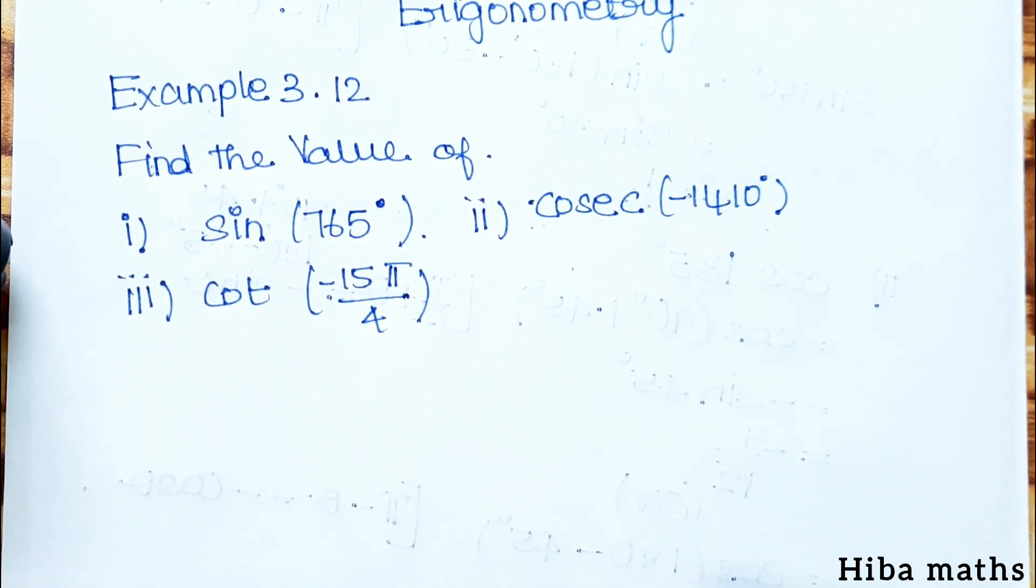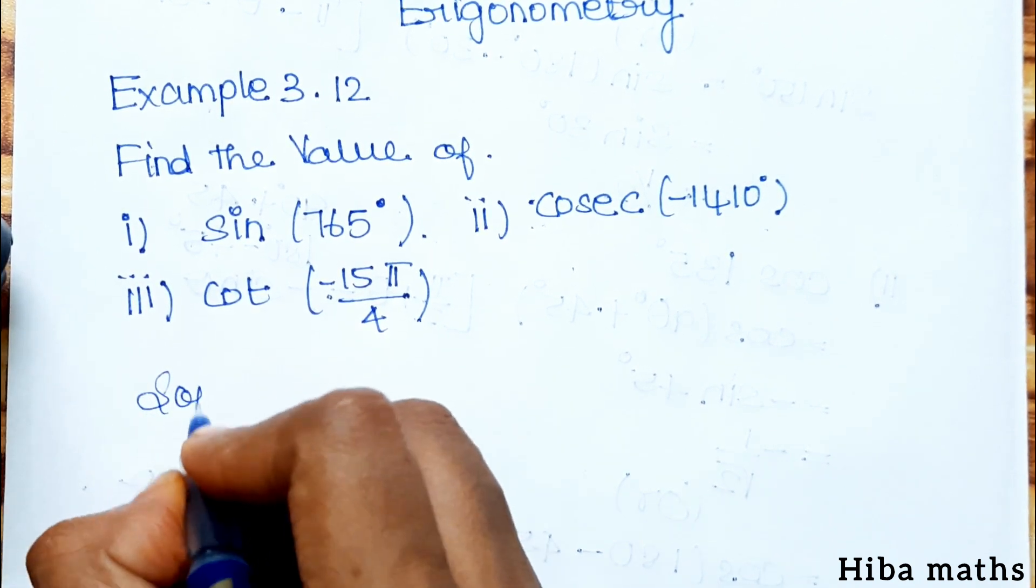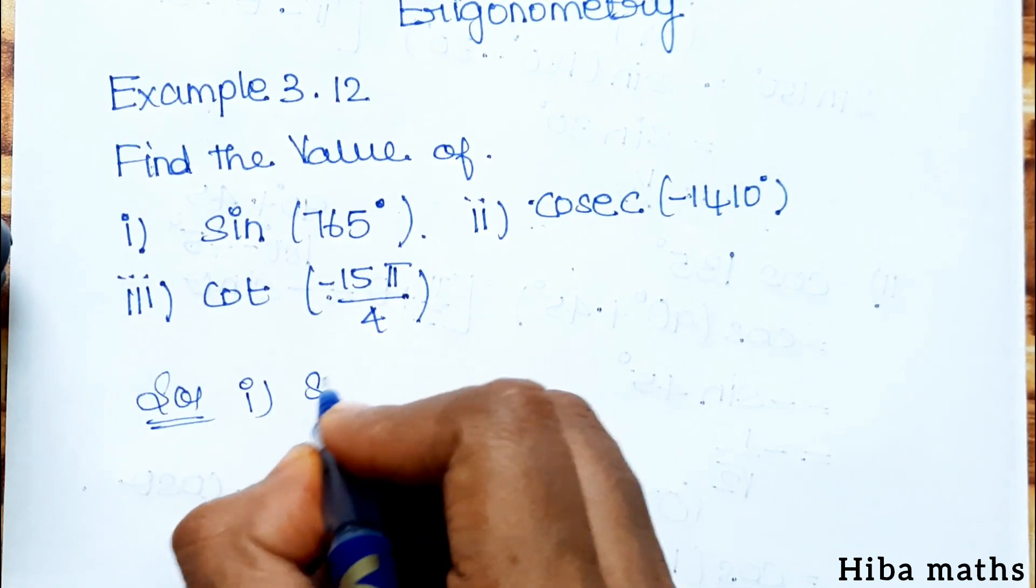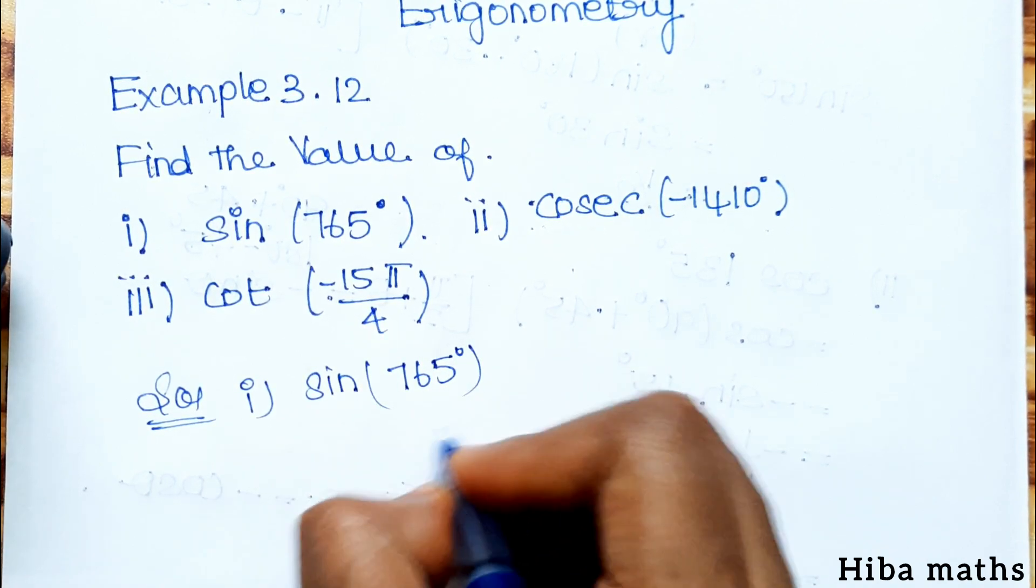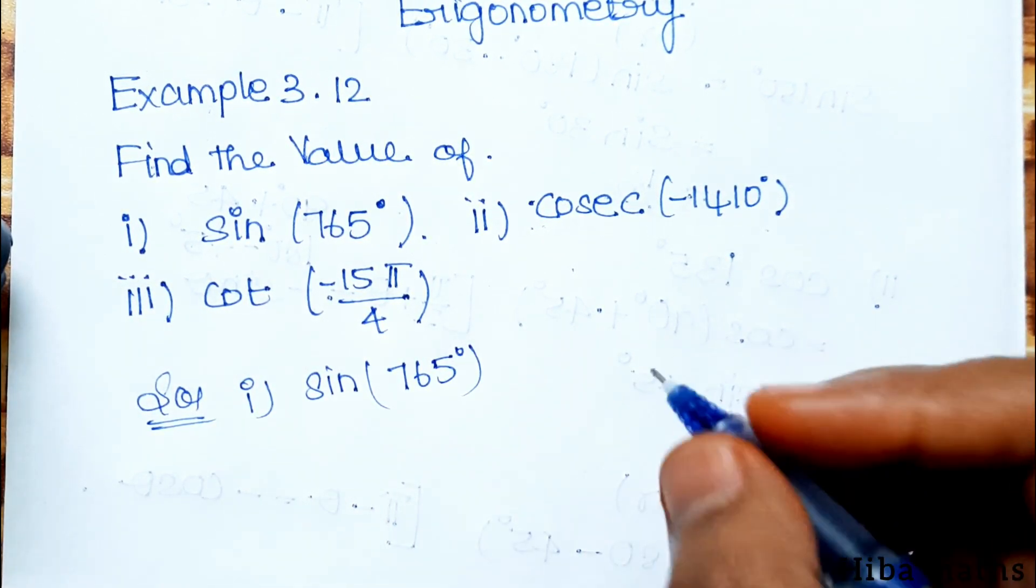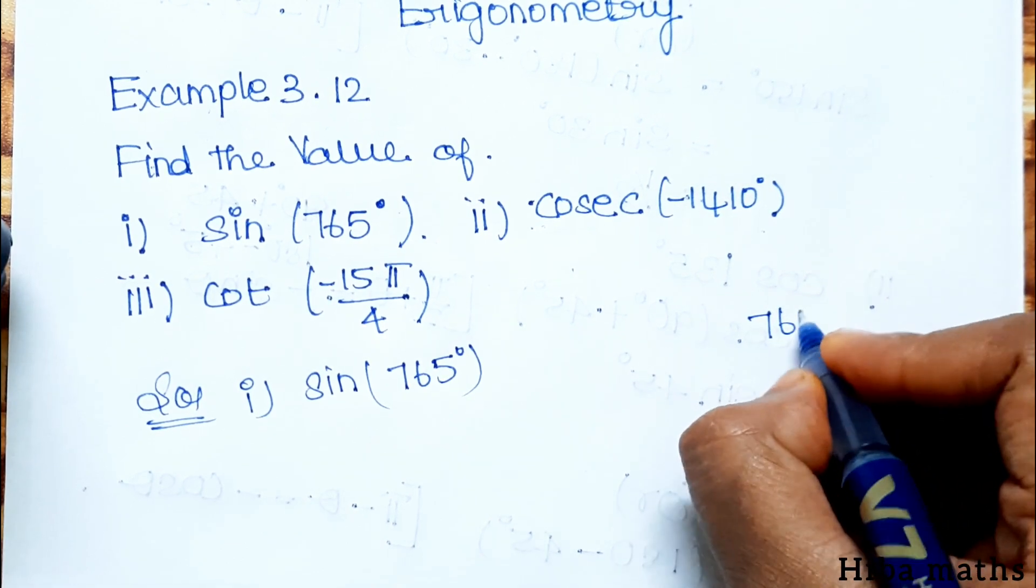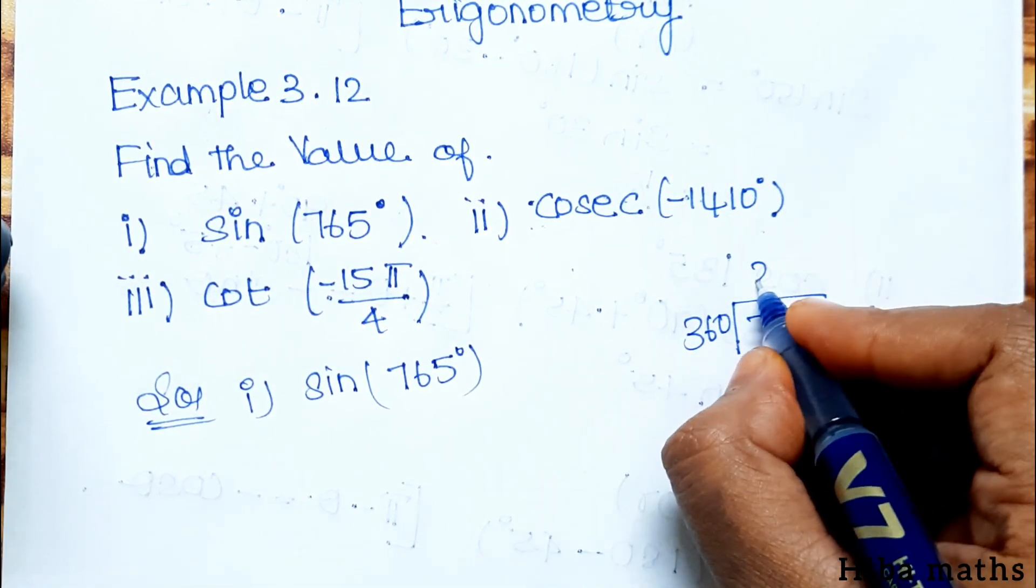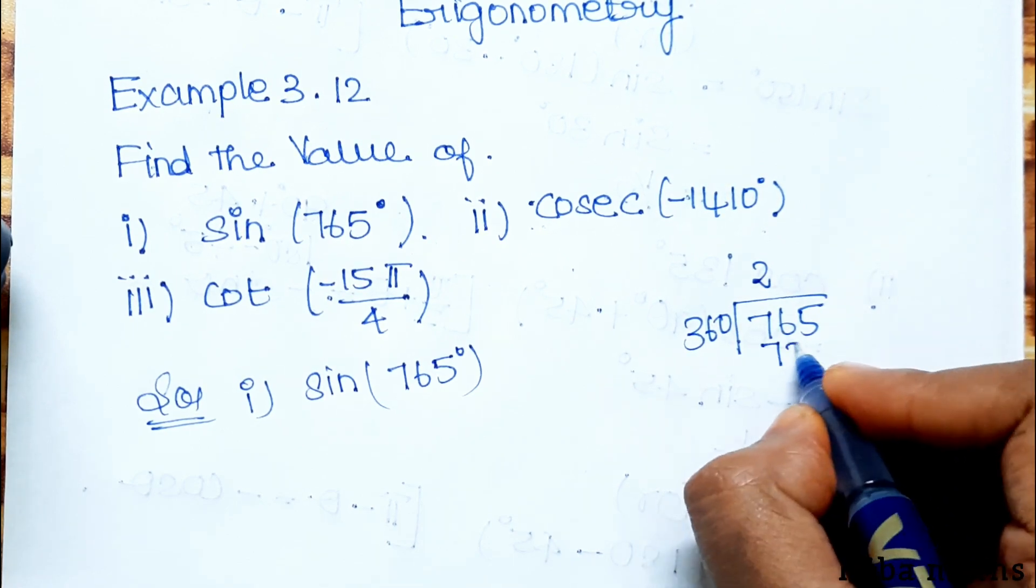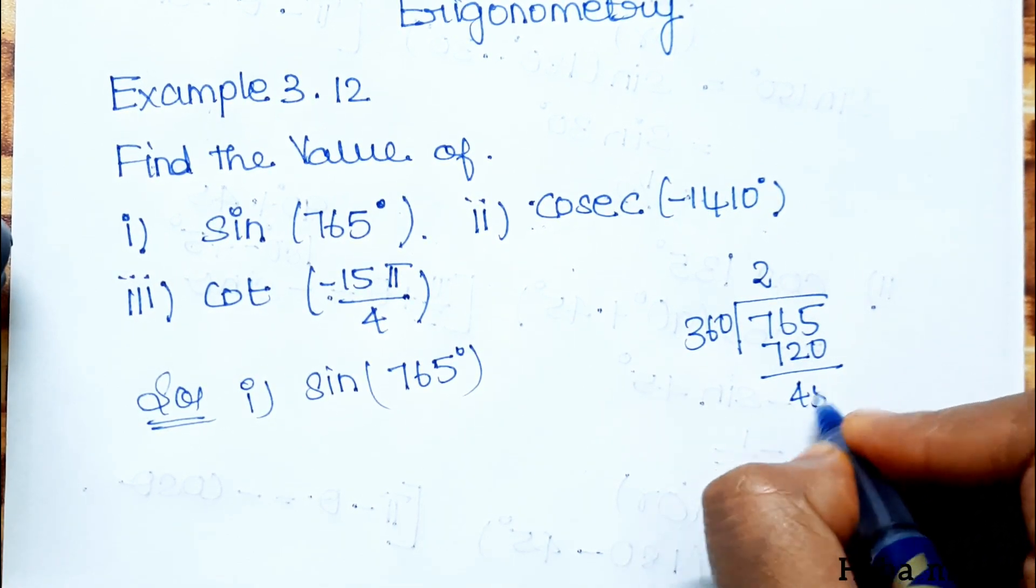Solution for first subdivision is sin 765 degree. We use the value of 360. We divide 765 by 360. We divide 2 times, which gives us 720. Balance is 45 degree.